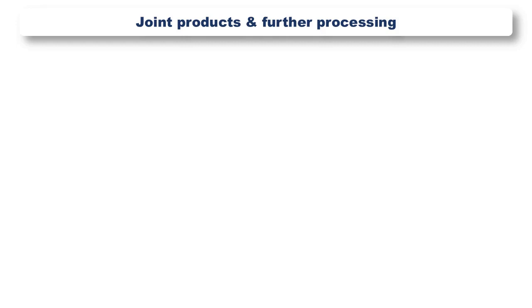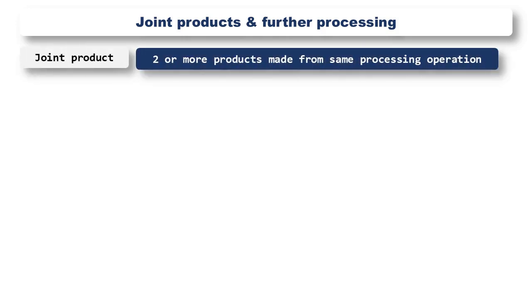The final area we are going to cover is the decision about whether to take a joint product or products and process them further rather than selling them at the split-off point. A joint product happens when two or more products are made from the same processing operation and they are roughly equal in terms of selling price. A typical example would be processing milk to make yoghurt and cream. For comparison purposes, a by-product occurs when turning milk into cheese — the main product is the curd for the cheese, and the by-product is the whey. We are only considering joint products here, and only those that could go through a further production process to give rise to another product.